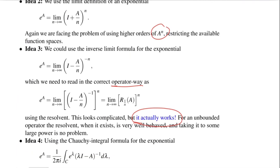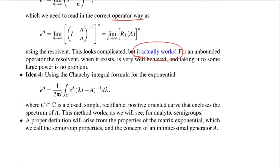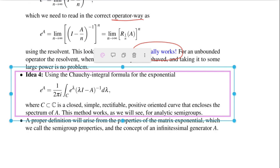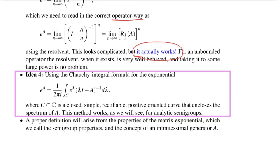And so then the fourth idea looks very scary. It's using the Cauchy integral formula. There's a formula how to compute the exponential in a complex plane. And then we just adapt it for an operator A. So e to the A is 1 over 2 pi I integral over C, e to the lambda, lambda I minus A inverse d lambda, complex path integral, where C is a closed, simple, rectifiable, positively oriented curve that encloses the spectrum of A. So what does this all mean?